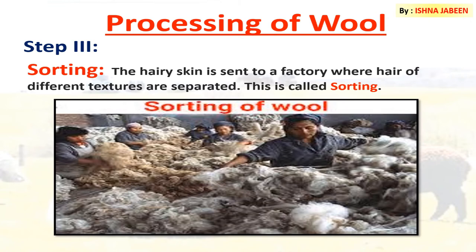The third step in processing of wool is sorting. After scouring, sorting is done. The hairy skin is sent to a factory where hair of different textures are separated or sorted, as you can see in the picture.